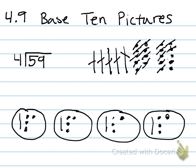My quotient would be — counting what's in each group — 10, 11, 12, 13, 14. And then a remainder of three. That's how you use the base 10 pictures.